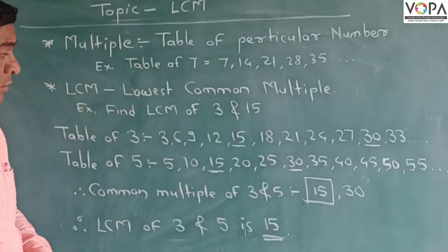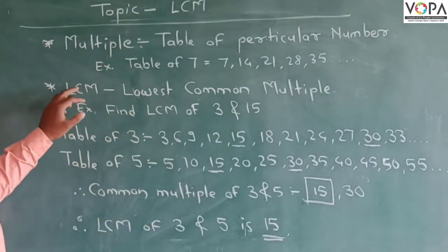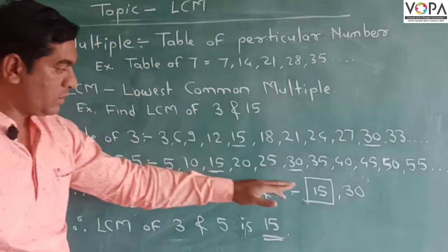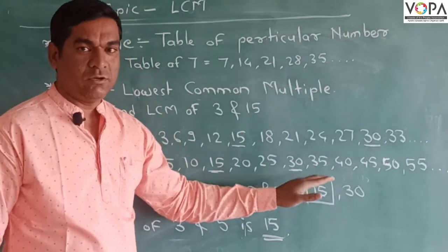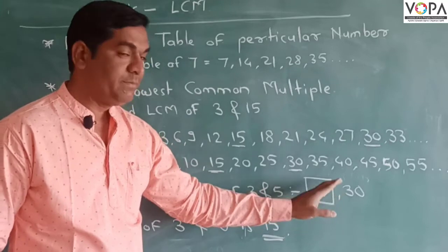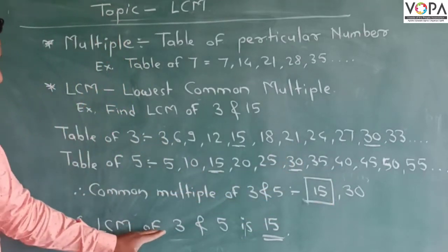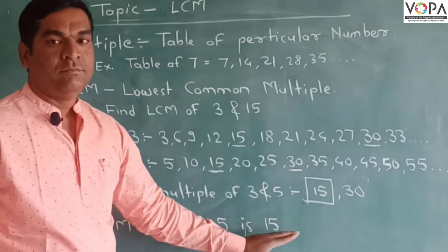So out of that, which is the LCM? How to find the LCM? By this definition, LCM means the lowest number. Compare these two numbers. Which is the lowest number, 15 or 30? 15. Yes, 15 is the lowest number. That's why the LCM of 3 and 5 is 15.